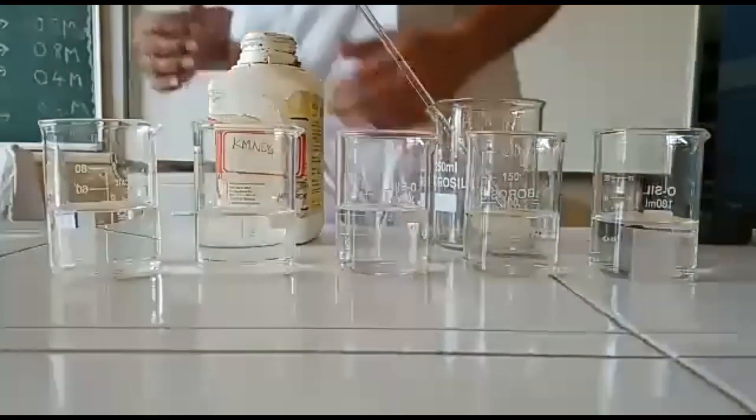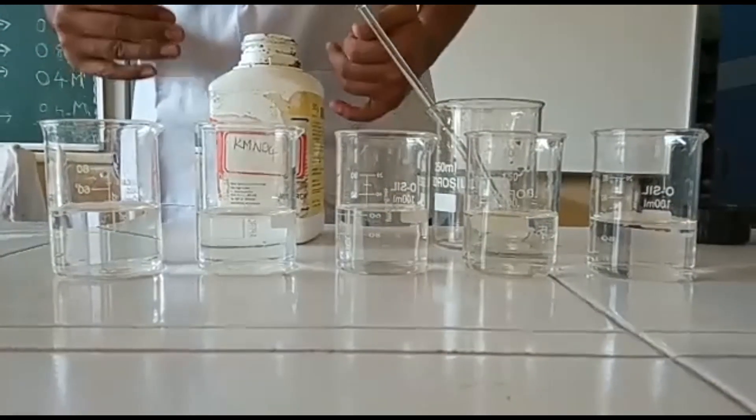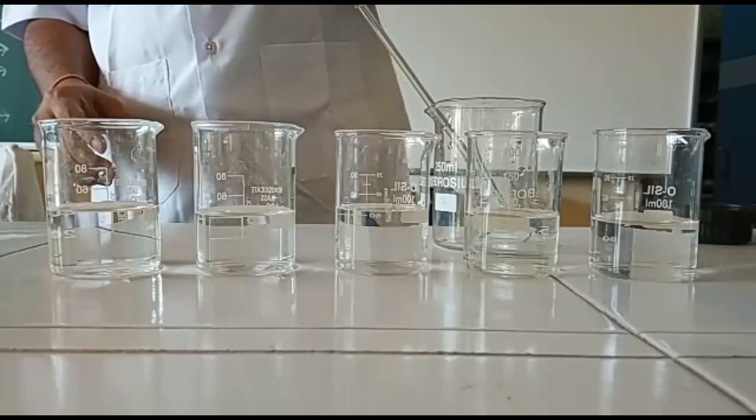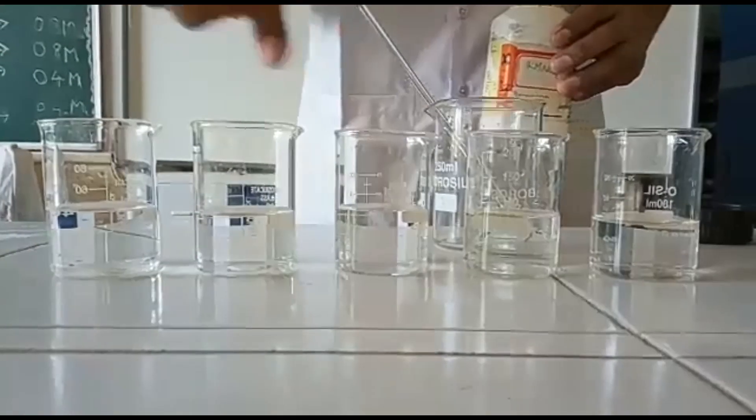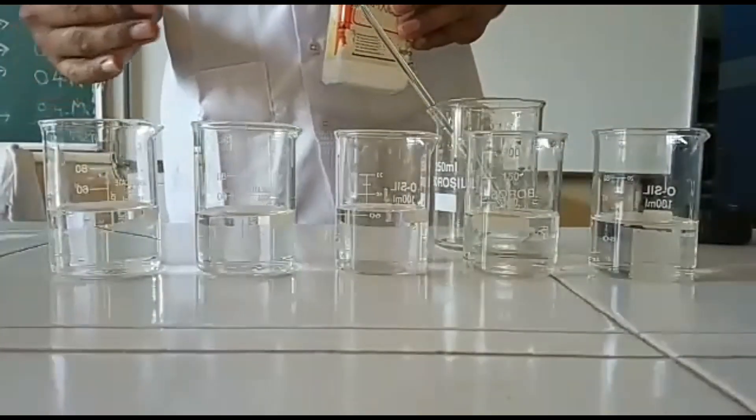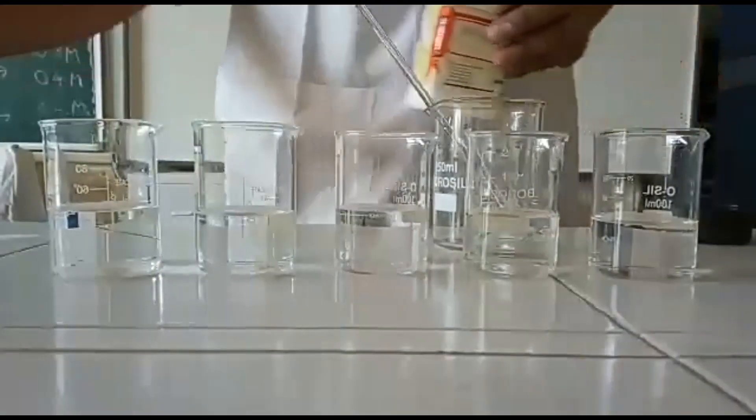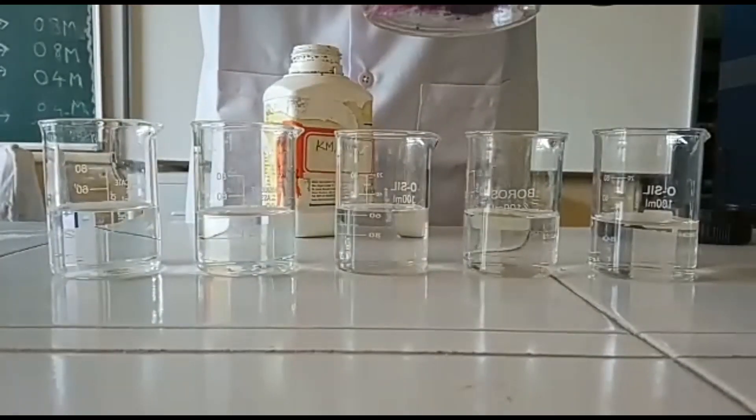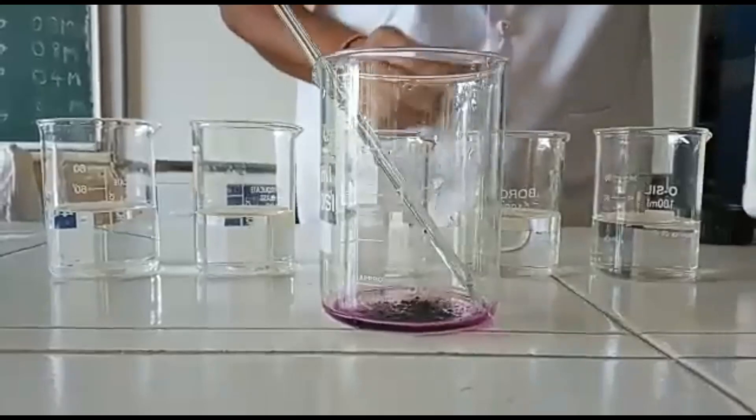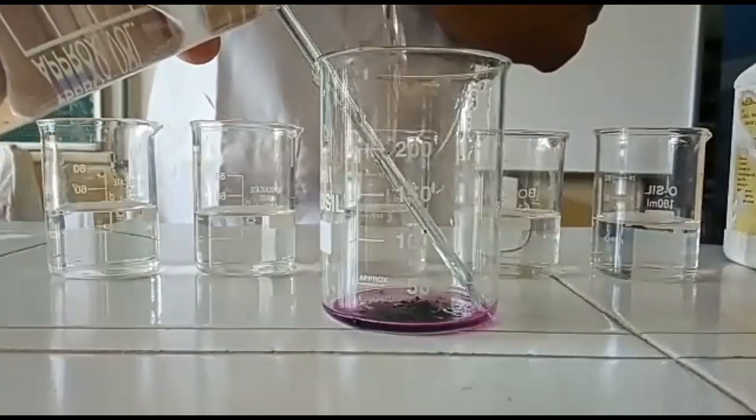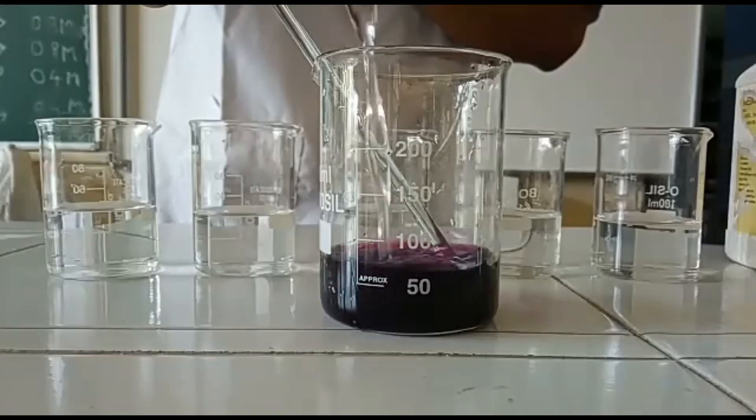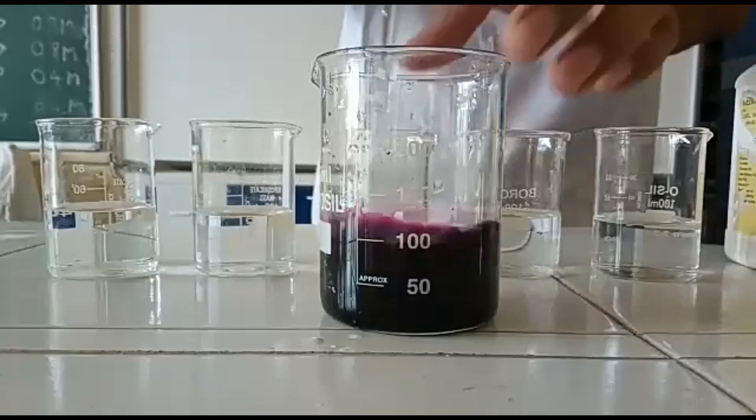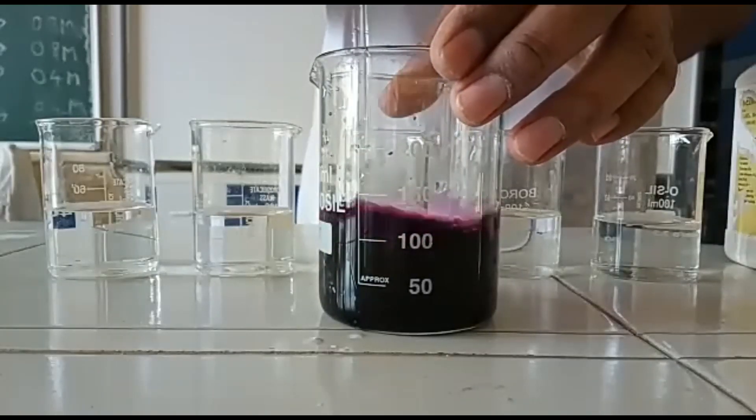Let us start with the activity to show that matter is made up of very small particles. We have taken potassium permanganate crystals and we have taken water in five different beakers of 100 ml. Now I am taking small amount of crystal, adding water up to 100 ml, and mixing it thoroughly for a uniform mixture.